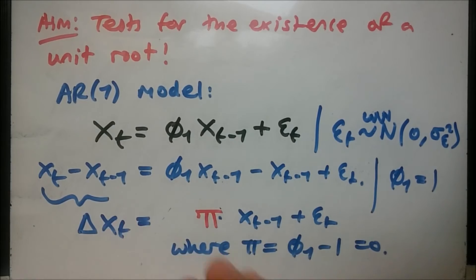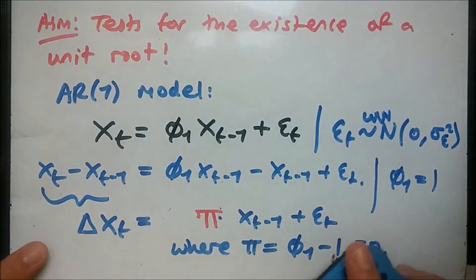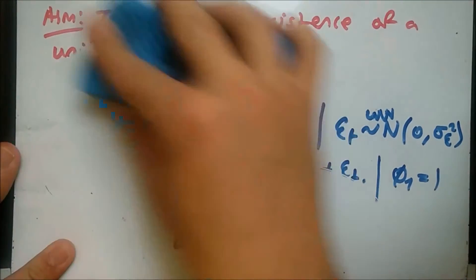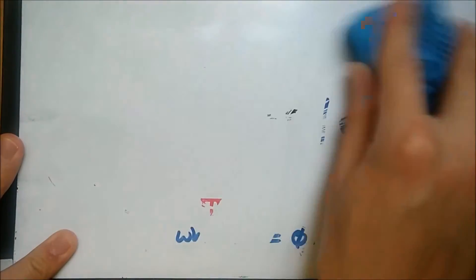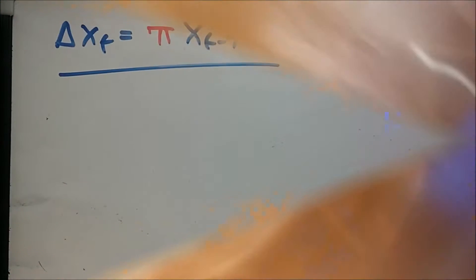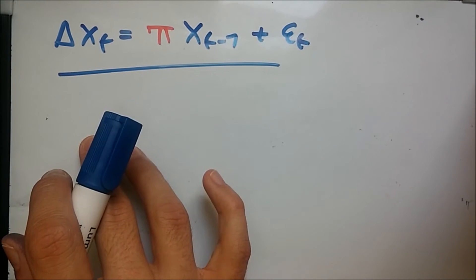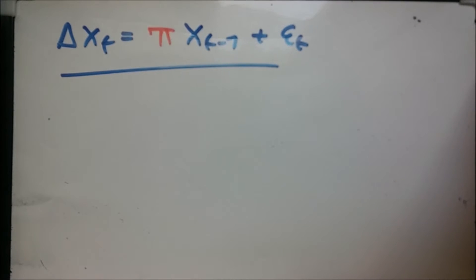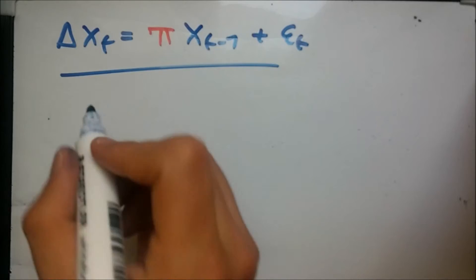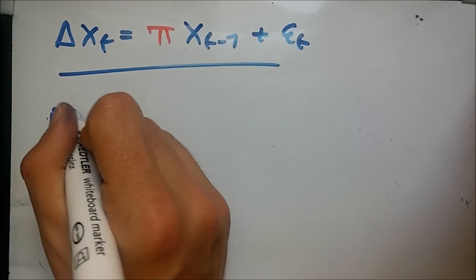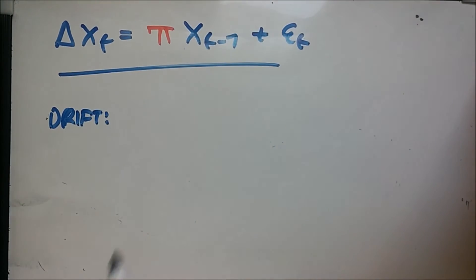Moving on to the main objective, let's consider two more cases. Normally you get a case where you encounter an equation with a drift component or a drifting trend component. Suppose we take the drift case.